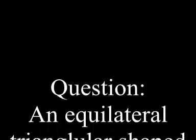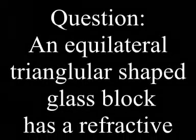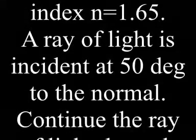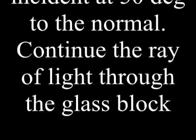An equilateral triangular shaped glass block has a refractive index of 1.65. A ray of light is incident at 50 degrees to the normal. Continue the ray of light through the glass block.